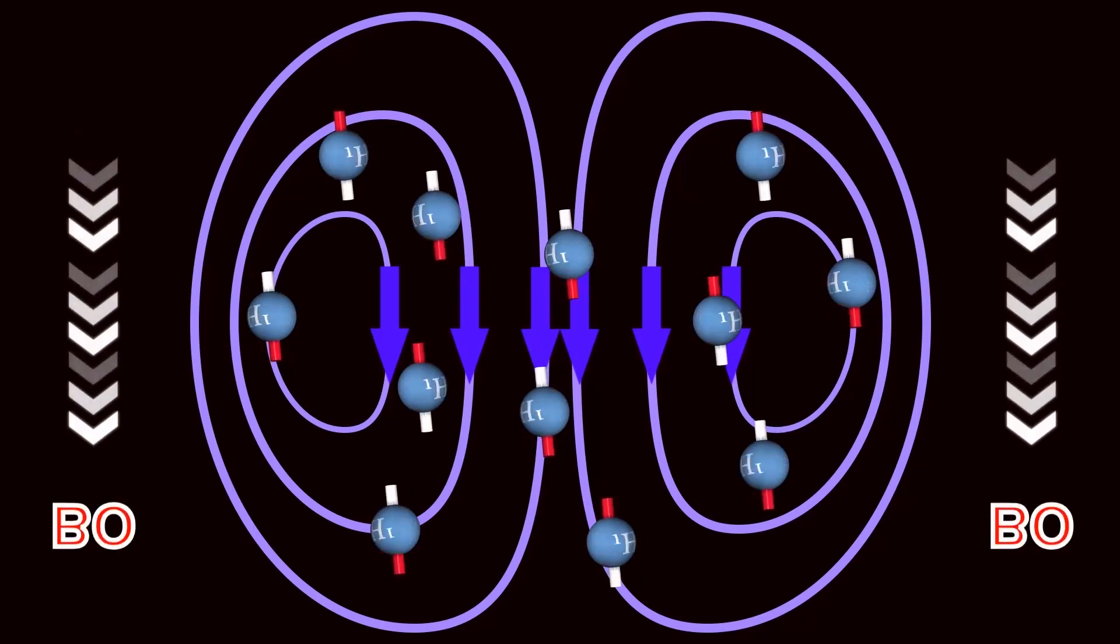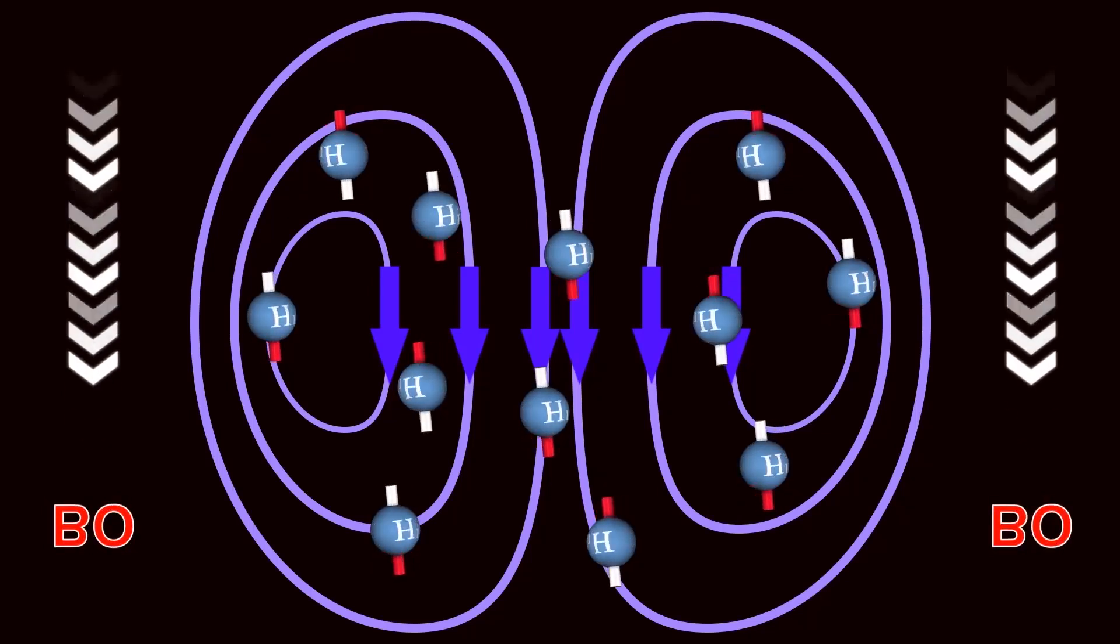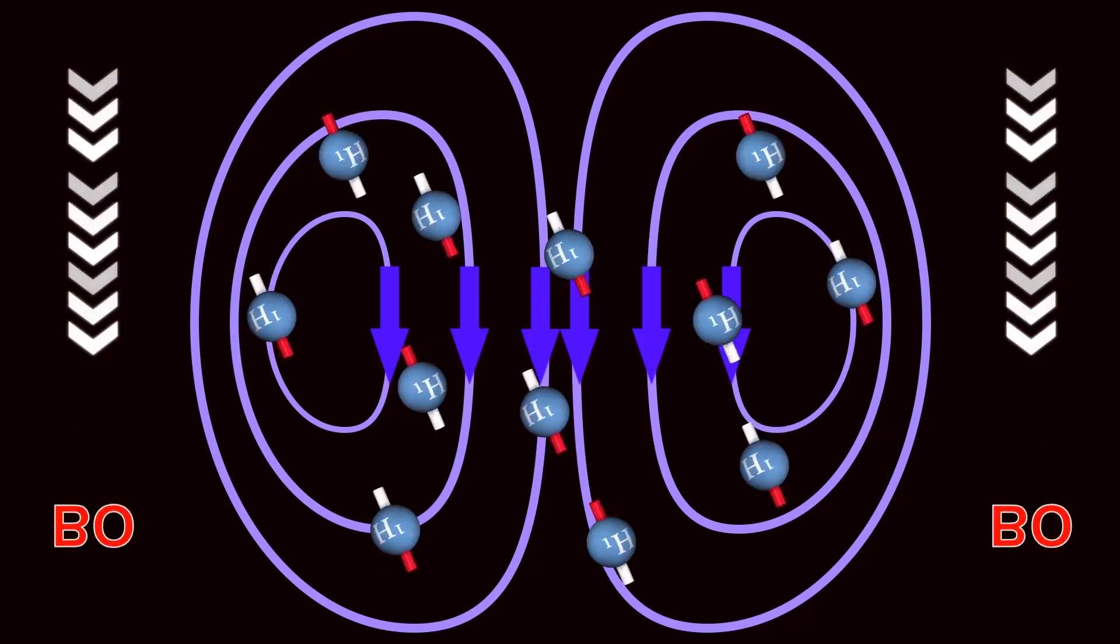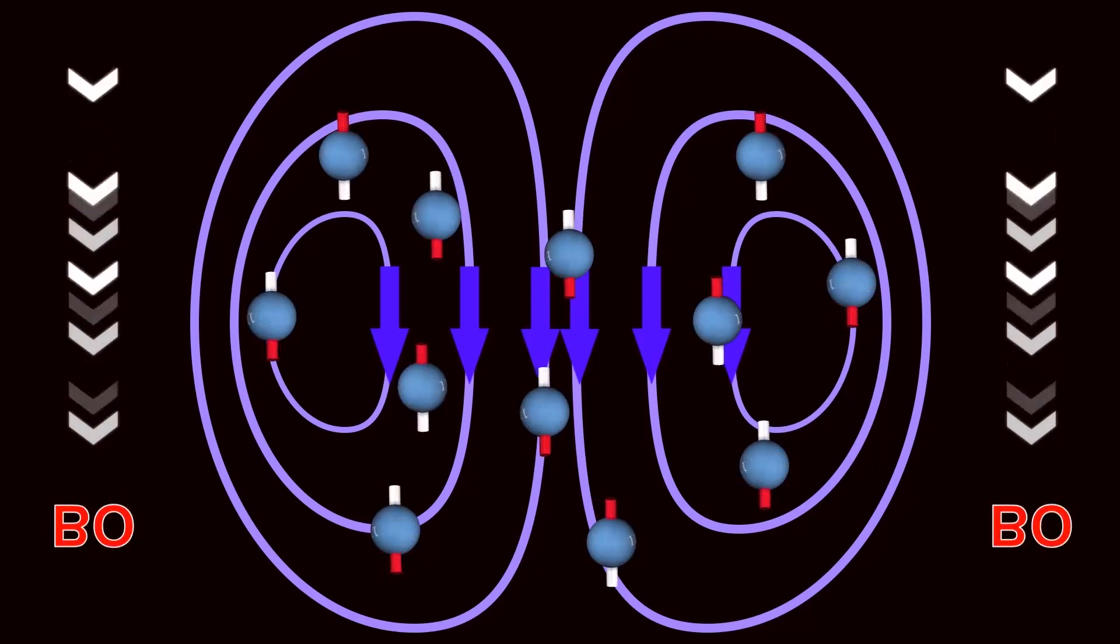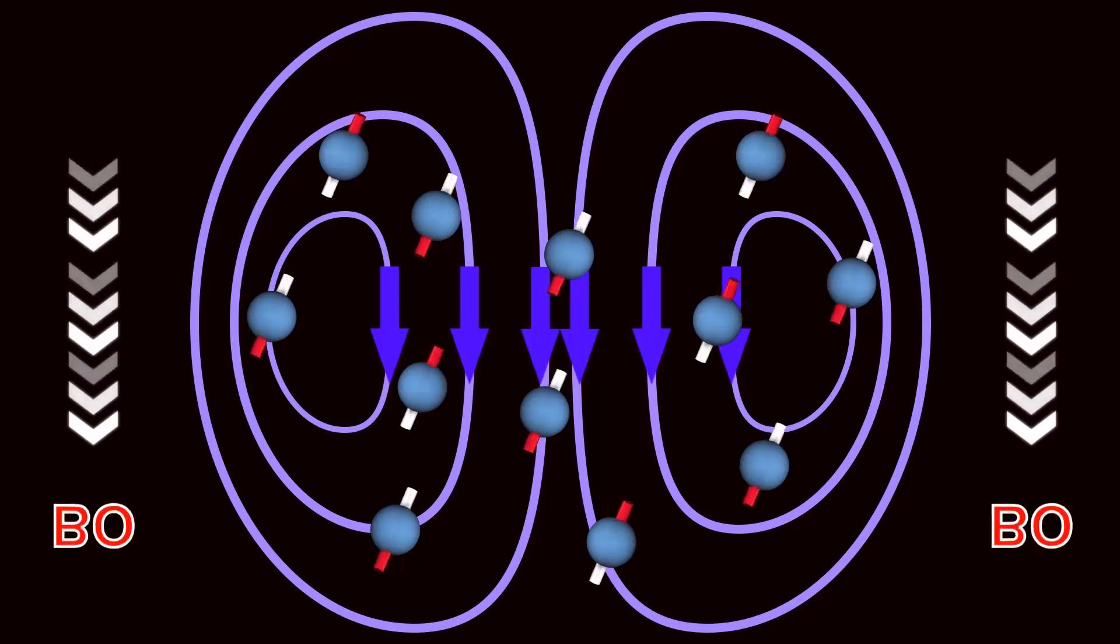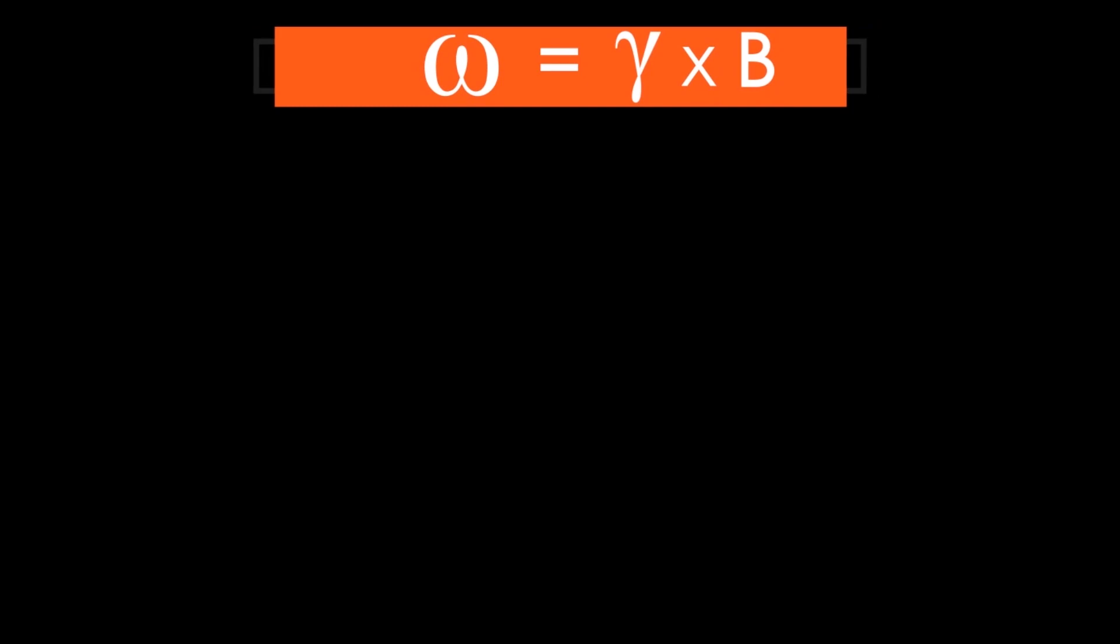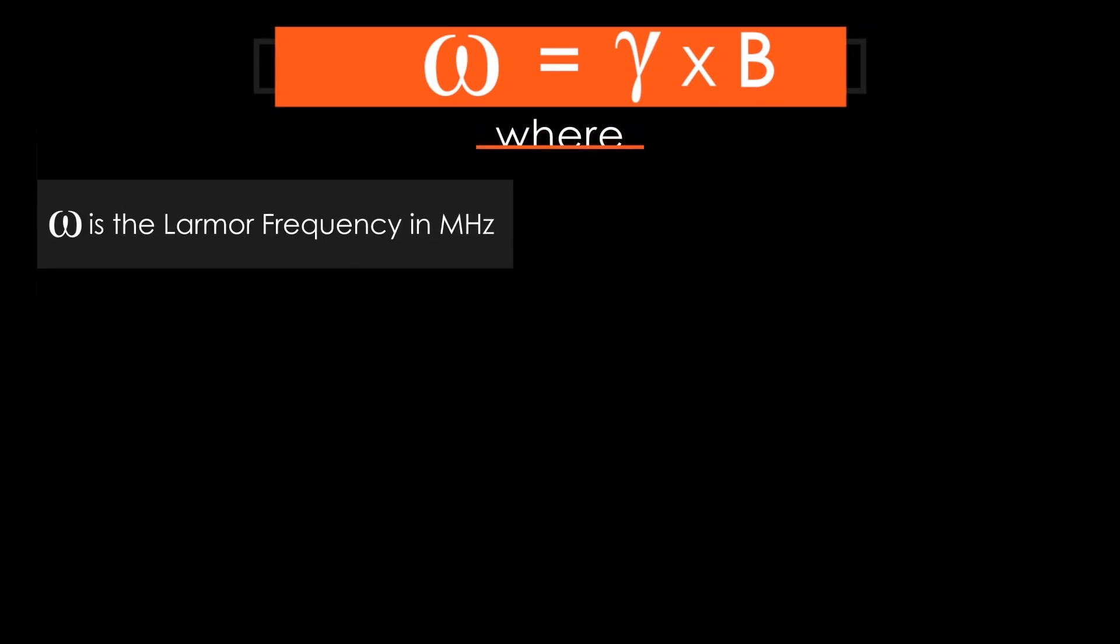Some protons align up, parallel, and some will align down, anti-parallel, while still spinning around on their own axes. The B0 field not only affects the hydrogen protons alignment, but also affects how fast these protons spin, called the Larmor frequency or precessional frequency.